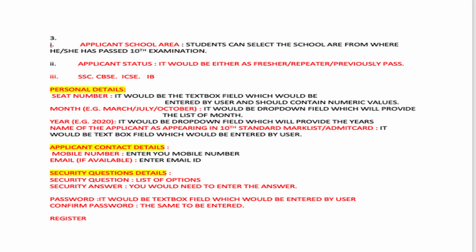After that, you have to fill in your month. For normal students it is normally March. You will get a dropdown showing March, July, October — select March. The year is written on your hall ticket. If you are passing this year, your year will be 2020.